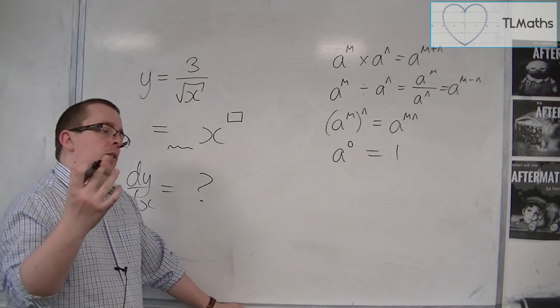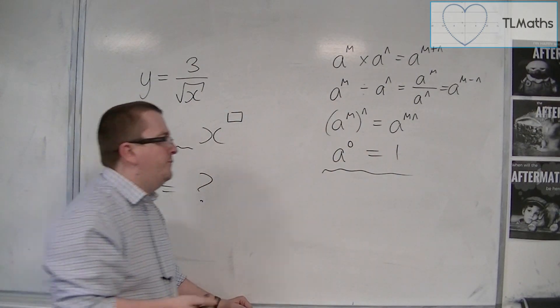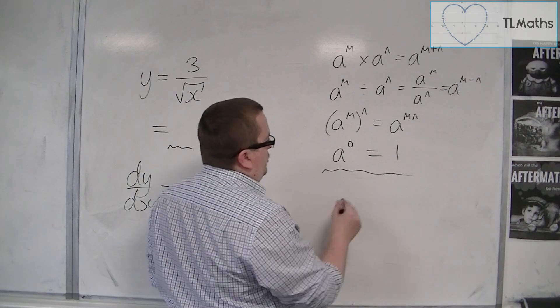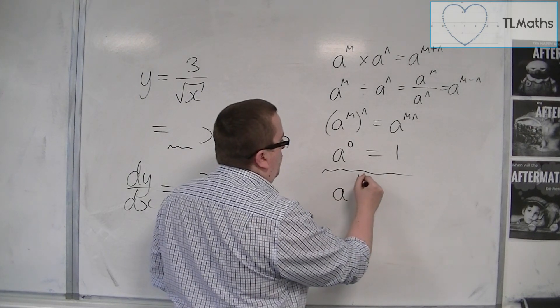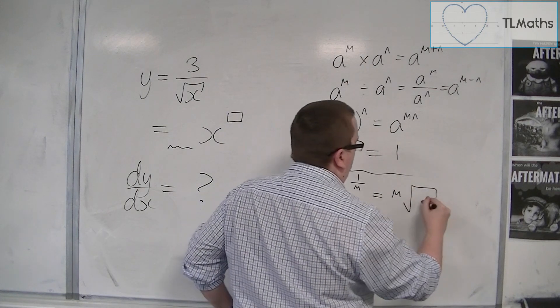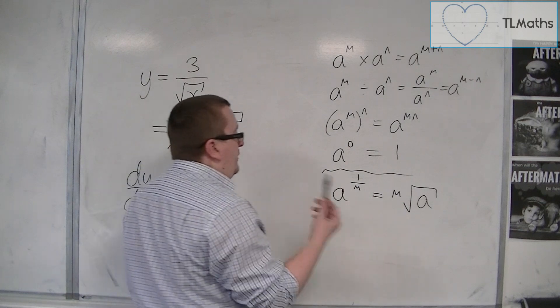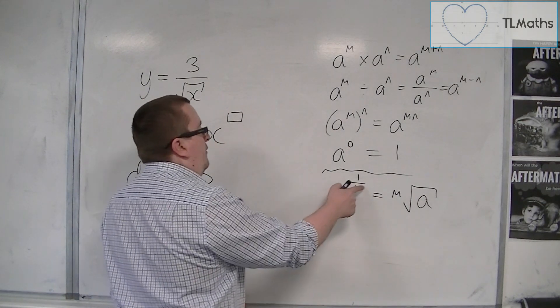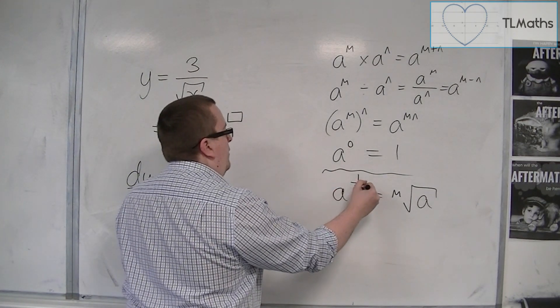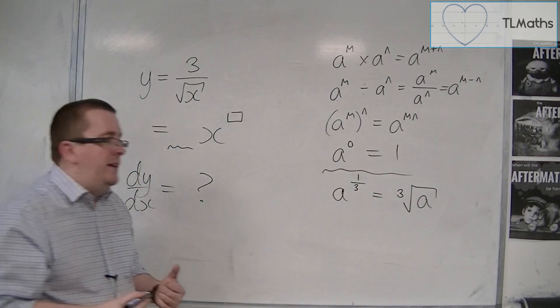But you also need, more than those at this stage, is knowing that a to the 1 over m is the mth root of a. So for example, if I have a to the power of a third, then that is the cube root of a. That's what that means.